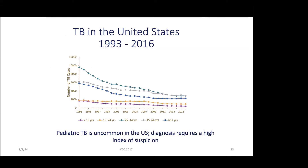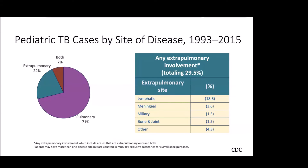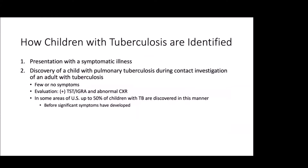Pediatric TB is pretty uncommon in the United States — the number of children diagnosed is quite small — so it really does require a high index of suspicion. By disease site, almost three quarters of pediatric TB is pulmonary, but that also means about a quarter is extrapulmonary. A lot of that is lymphatic. You'll also see meningitis, miliary TB, and some bone and joint disease.